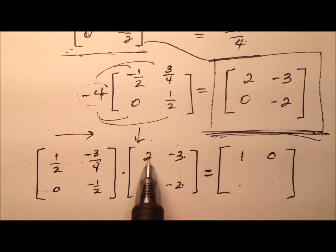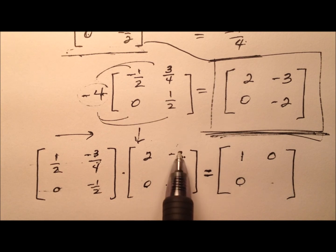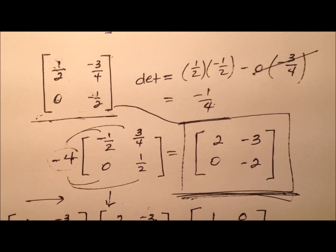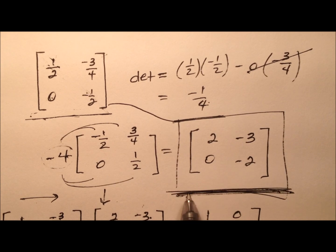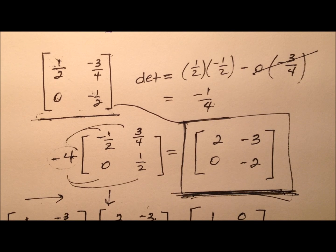Row 2 column 1, 0 and 0 gives us 0. And finally, 0 times that is 0, and then negative 1/2 times negative 2 is 1. So yeah, we can see that this is indeed the identity matrix, which kind of helps us ensure that this indeed is the inverse for this original 2 by 2 square matrix.